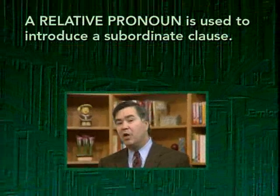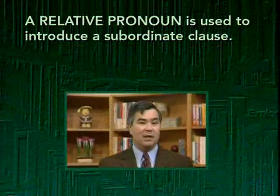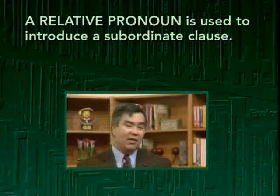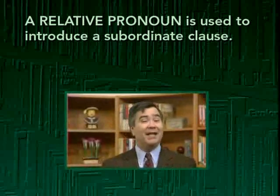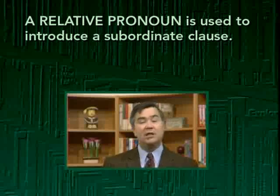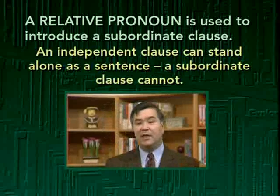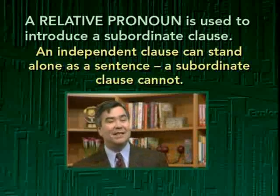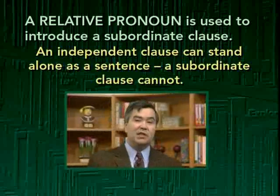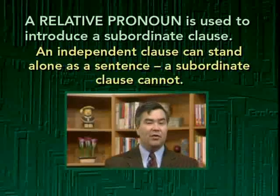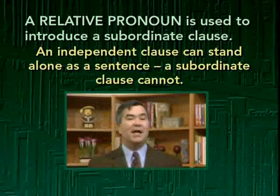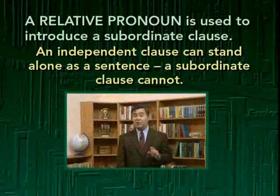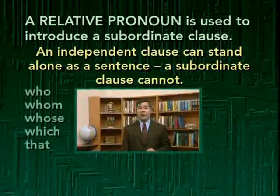The fourth and final important category is relative pronouns. A relative pronoun is used to introduce a subordinate clause. There are two kinds of clauses in English sentences: independent clauses and subordinate clauses. When a subordinate clause tries to stand alone as a sentence, the result is a sentence fragment and a grammatical error. There are just five relative pronouns in English: who, whom, whose, which, and that.